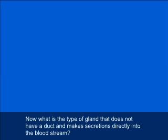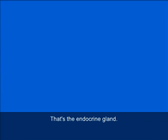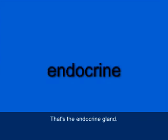The second type of gland does not have a duct and makes secretions directly into the bloodstream. That's the endocrine gland — E-N-D-O-C-R-I-N-E. Endo means within.